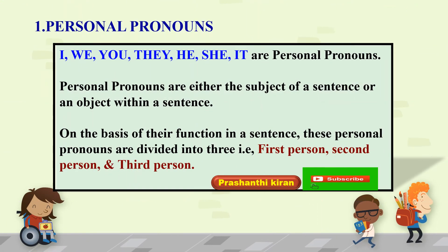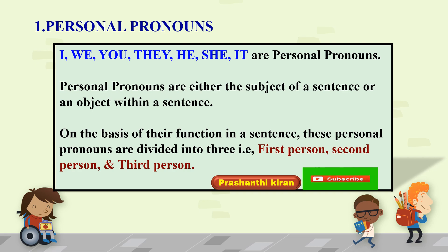Let us learn about personal pronouns. I, We, You, They, He, She, It are personal pronouns. Personal pronouns are either the subject of a sentence or an object within a sentence. On the basis of their function in a sentence, these personal pronouns are divided into three: first person, second person, and third person.